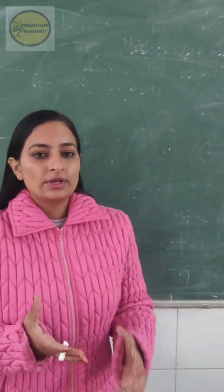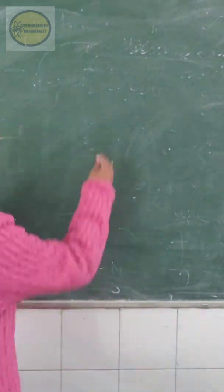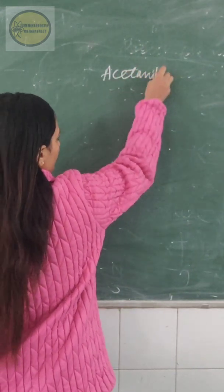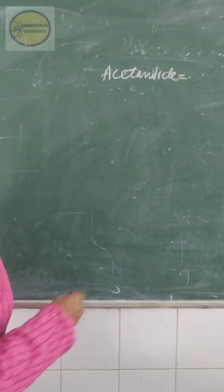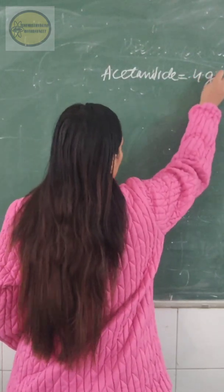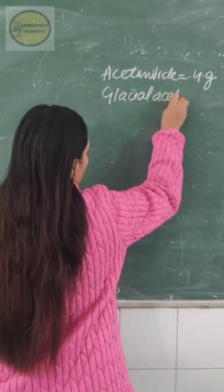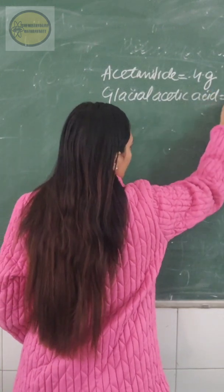So now first of all what are the various requirements for this preparation? We will require definitely our acetanilide, so the amount which you required is about 4 grams. Then your glacial acetic acid as we have also used in the previous preparation, glacial acetic acid, so that is 4 ml.